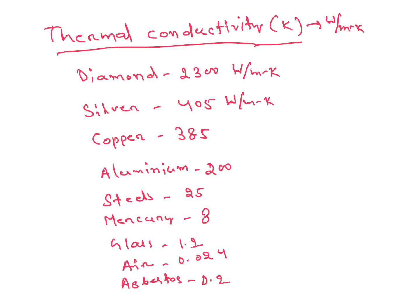For copper 385, aluminum 200, steel approximately 25, mercury 8, glass 1.2, air 0.024, and asbestos 0.2. All units are in watt per meter Kelvin.